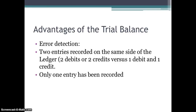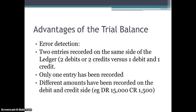Another potential error the trial balance can catch is where only one entry was recorded — for example, you debited the bank ledger but didn't credit the capital ledger. Also, a recording error where you debited $15,000 but only credited $1,500 is a common mistake — so be careful when entering your transactions.